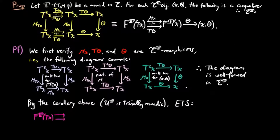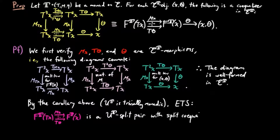By the corollary above and noting that the forgetful functor for the Eilenberg-Moore category is trivially monadic, it is enough to show that the pair mu X and T theta is a UT-split pair with split co-equalizer UT theta, which is just the morphism theta in E.